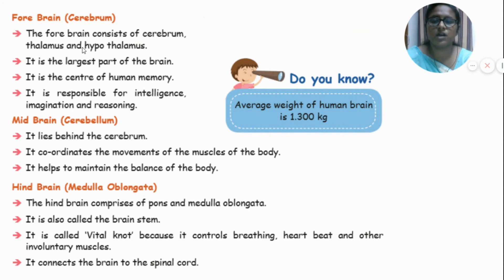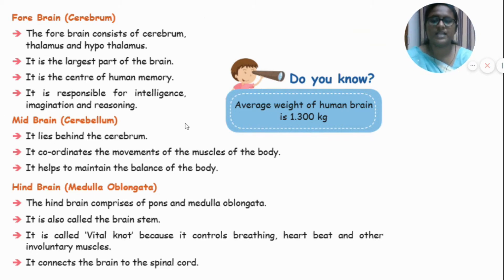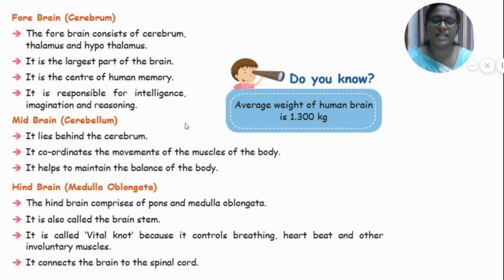The forebrain consists of the cerebrum, thalamus, and hypothalamus. It is the largest part of the brain and the center of human memory. It is responsible for intelligence, imagination, and reasoning. The midbrain lies behind the cerebrum. It coordinates the movement of muscles of the body and helps to maintain the balance of the body.